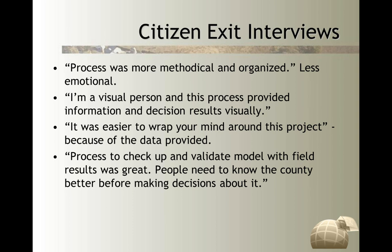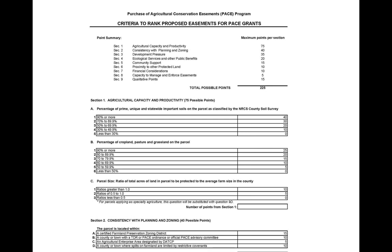They could argue on the data and compare it to what the community goals and objectives are, and really provide information in a way people could understand. Being visual people, they really liked having maps to show what the impacts on the landscape would be — they needed to see how the landscape was affected. Written goals and objectives and written policies just weren't enough to see what the consequences were. The person from the village also noted the value of the validation model: the process to check up and validate the model with field results was great. He was concerned that in the prior comprehensive planning process, they didn't really know about the county before making policies — and this process that showed them the impacts of policies on the landscape before they occurred was really important.